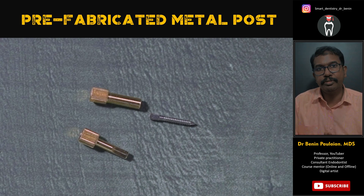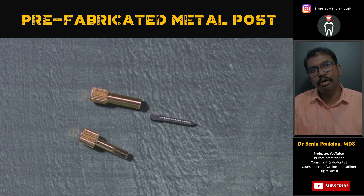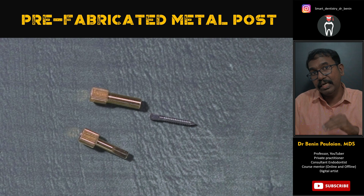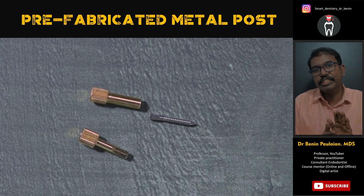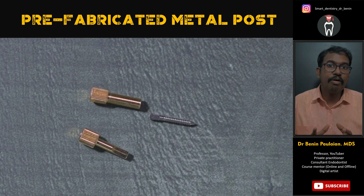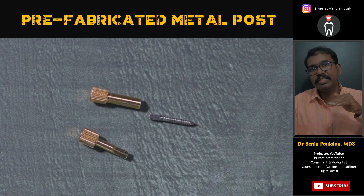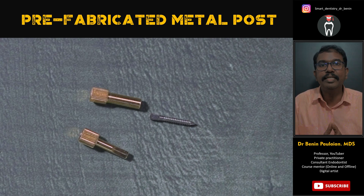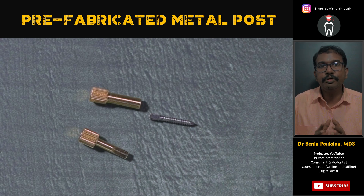To prevent root fracture, it is commonly suggested to use prefabricated fiber posts. However, there are many situations where prefabricated metal posts are ideally indicated. For premolars and molars, the forces directed toward the tooth are mostly vertical, whereas for anterior teeth the forces are lateral. So for vertically directed forces in premolars and molars, we can always go for a prefabricated metal post.